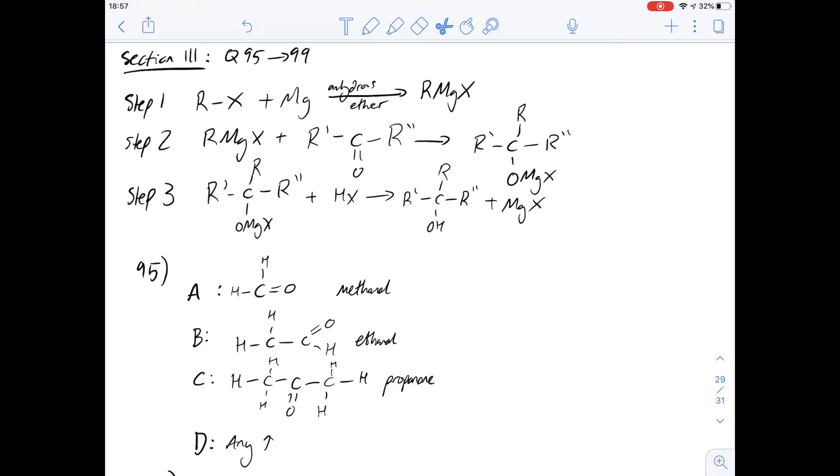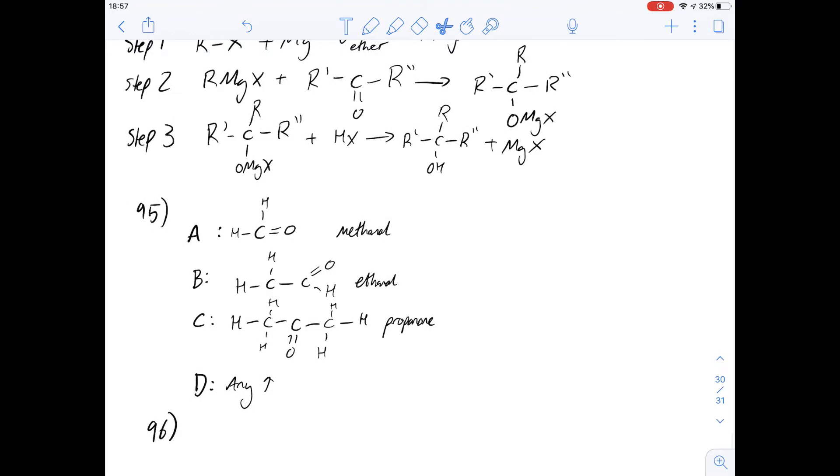With propanone you'd end up with a tertiary alcohol and so we know it's not going to be A, C and certainly not D which leaves us with B. And because there's two carbon atoms in this one we get a position of the OH group which allows it to be a secondary alcohol. So the answer for 95 is going to be B.